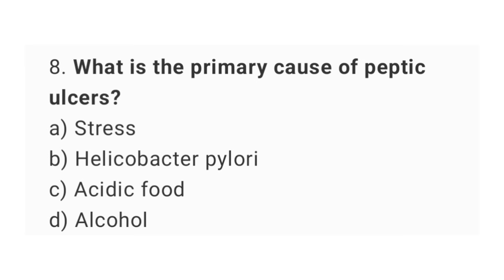Question number eight: what is the primary cause of peptic ulcer? The right answer is option B, Helicobacter pylori.